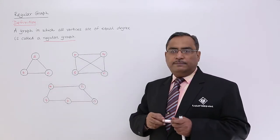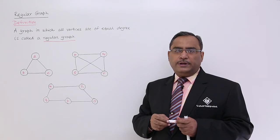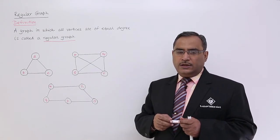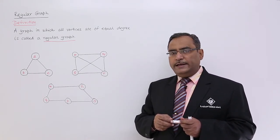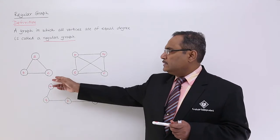Consider this particular graph. Here each and every node is connected with two edges. Each and every node has degree equal to 2, so it is a regular graph.